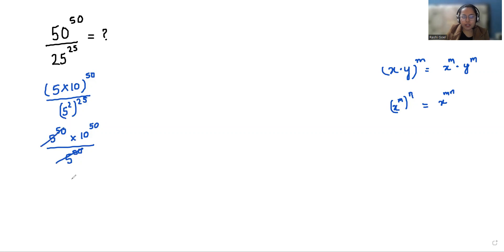Now we can eliminate 5 power 50 from numerator and denominator. So what is left? 10 power 50.